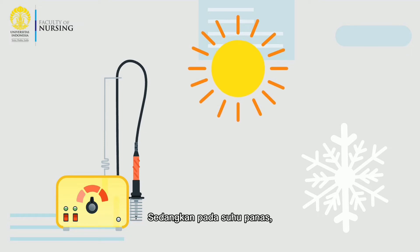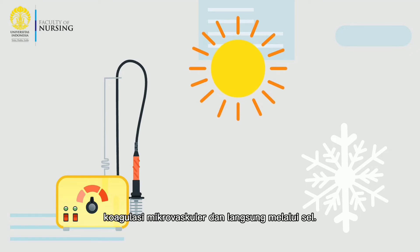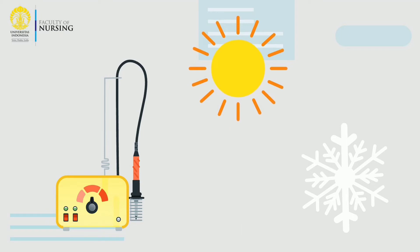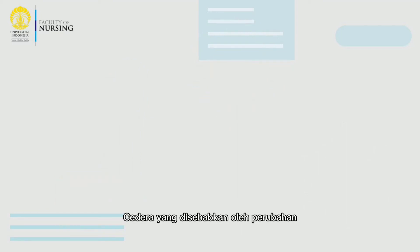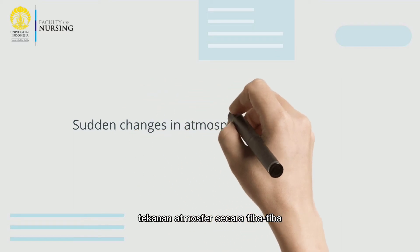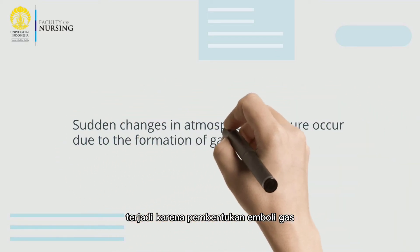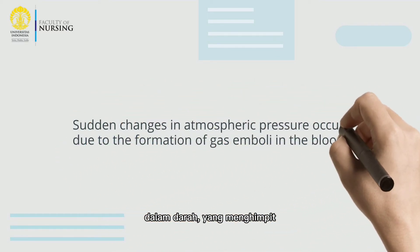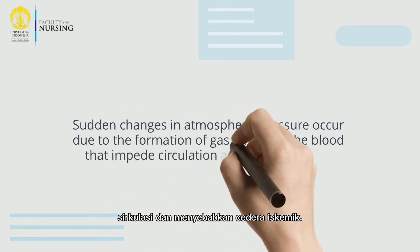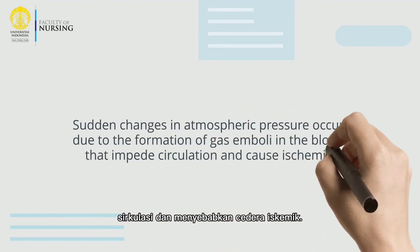With hot temperatures, hyperthermic injury can occur through microvascular coagulation and directly through cells. Injuries caused by sudden changes in atmospheric pressure occur due to the formation of gas emboli in the blood that impede circulation and cause ischemic injury.